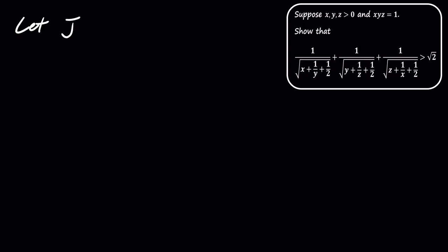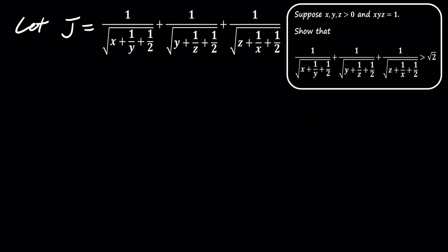Let's define j to represent the left-hand side of the inequality. So, j is the sum of these three terms.